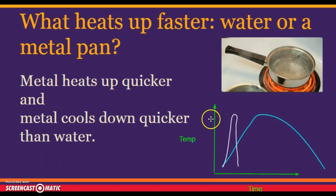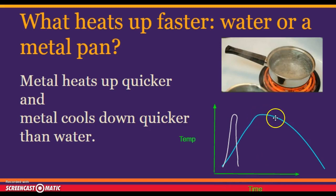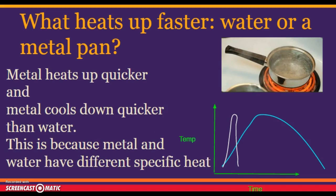On a graph of temperature over time, water is the blue line — it takes a long time to heat up and a long time to cool off. Metal heats up fast and cools off fast. The fact that they take different amounts of time to heat up and release heat has to do with specific heat — the metal and water have different specific heats.